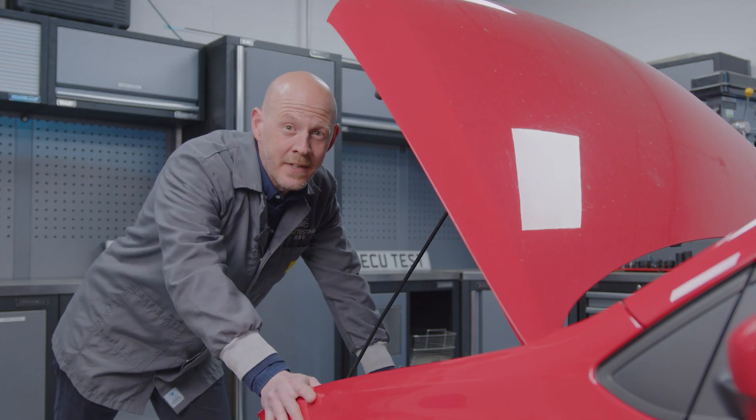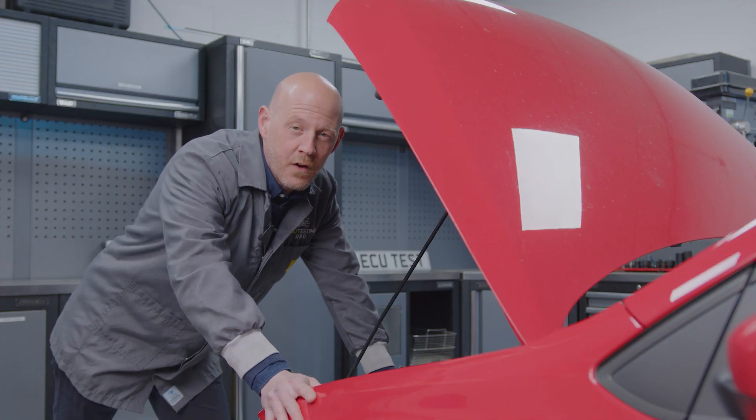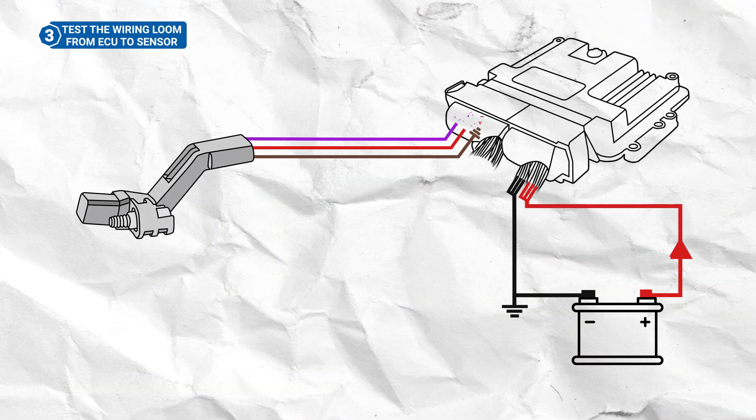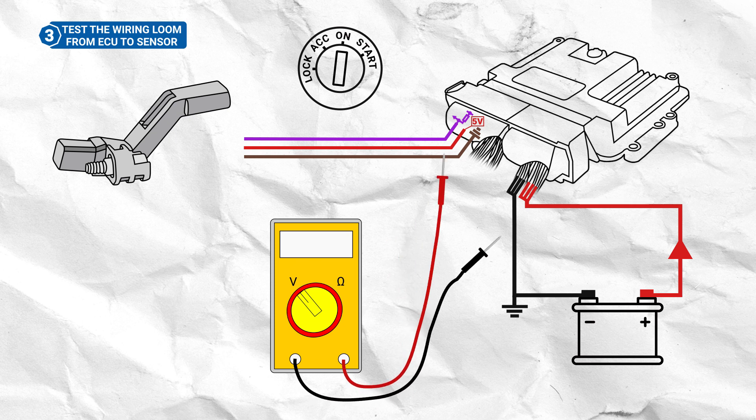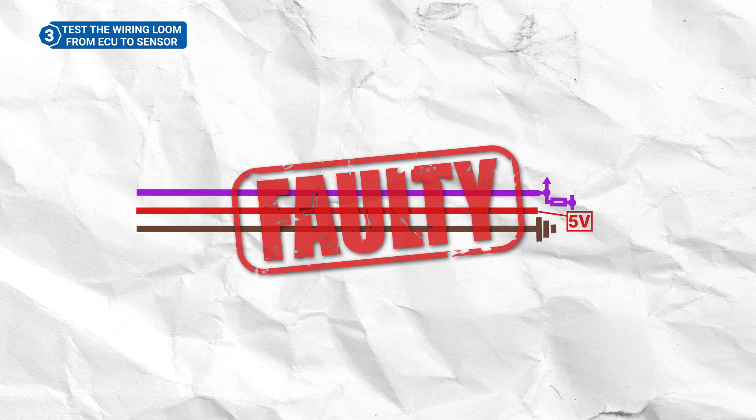Now you know what your fault codes mean, let's figure out where in the circuit the faults could lie. Conduct the same test as before on the wire or wires which gave you an incorrect reading, but this time probe at the ECU connector. If these readings are now within the expected ranges, then you have a fault in the wiring loom between the ECU and the Crankshaft Sensor.